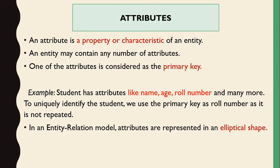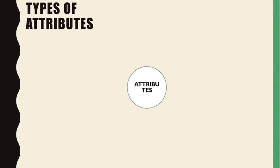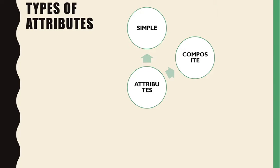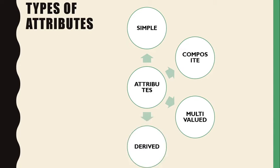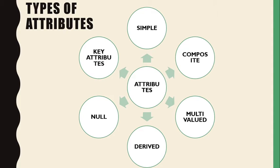In the entity-relationship model, attributes are represented in elliptical shapes. There are a total of six types of attributes: the first is a simple attribute, second is a composite attribute, third is a multi-valued attribute, fourth is a derived attribute, fifth is a null attribute, and sixth is a key attribute.